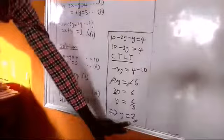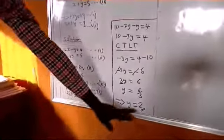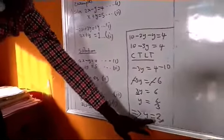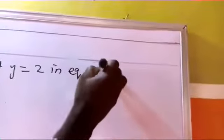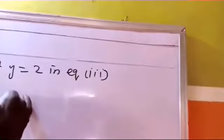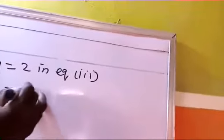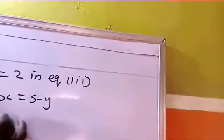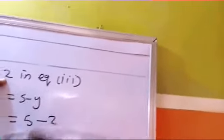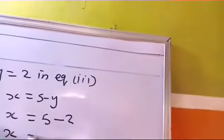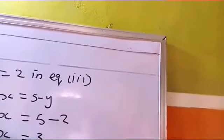Now, remember, we have now discovered the value of y here. From this, we are going to replace this y in equation three. Put y = 2 in equation three. Remember, equation three is x = 5 - y. Therefore, x = 5 - what's the value of y? 2. So, x = 5 - 2, which is 3.